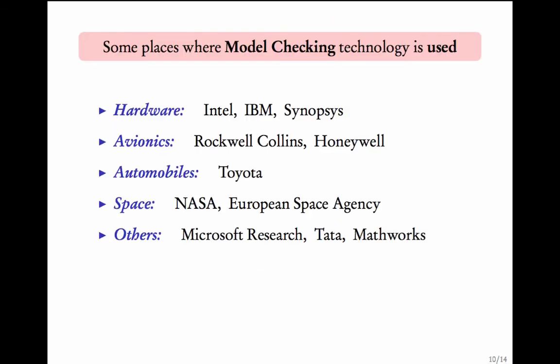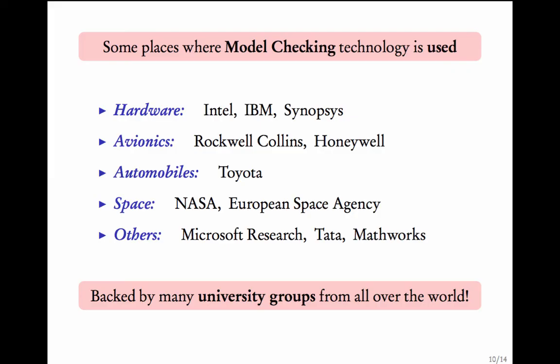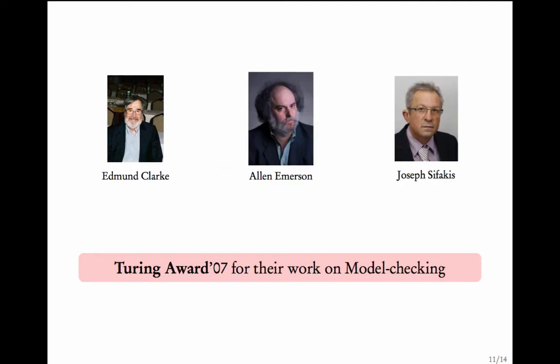Model checking is becoming popular among many industries. It has been extremely useful in hardware — Intel extensively uses model checking methods to certify its products. In avionics, there has been a recent interest to incorporate this technology as well. The same is true for automobile and space technologies. Apart from industries, many universities all over the world are doing research in this area. The 2007 Turing award — the equivalent of the Nobel prize in computer science — was handed to the founders of model checking.